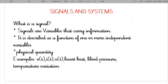A signal is described as a function of one or more independent variables. Basically it is a physical quantity that varies with some independent or dependent variable. Examples of signals are V(t), where voltage is varying with respect to time, and I(t), where current is changing with respect to time. The current is a physical quantity which depends on time.